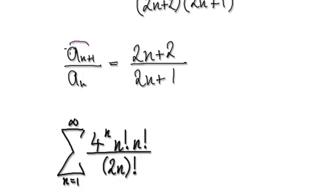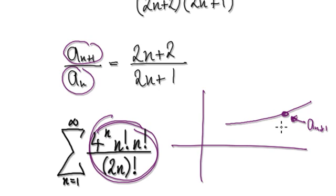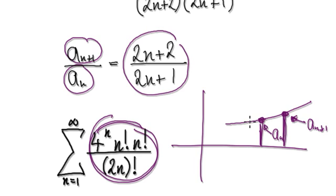So what that means is, when you look at the next term divided by the current term — so looking at this, it would be something like this: the next term, a(n+1), and then this is your current term, a(n). If the next term divided by the current term is always bigger than 1, that means it must be going up. So by the nth term test, it's got to diverge — it's definitely going to diverge, because it's just going to get bigger and bigger, so you're just going to add a bigger amount.